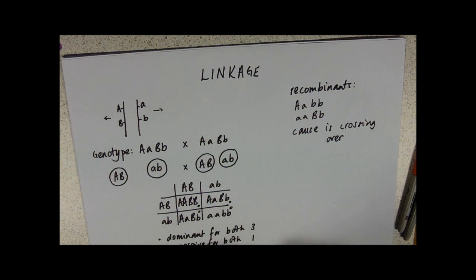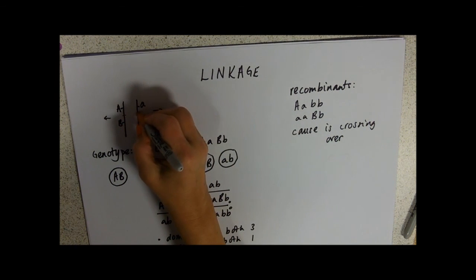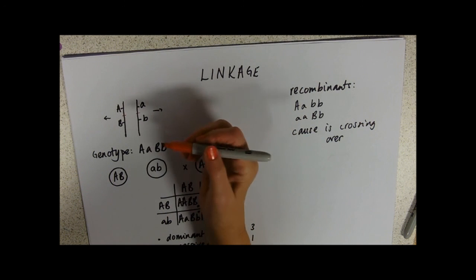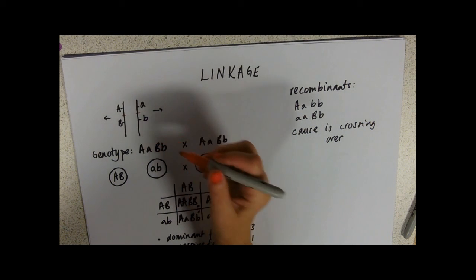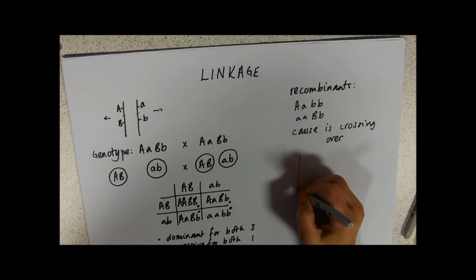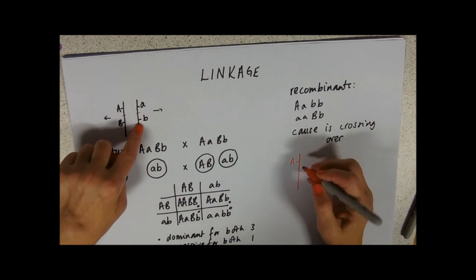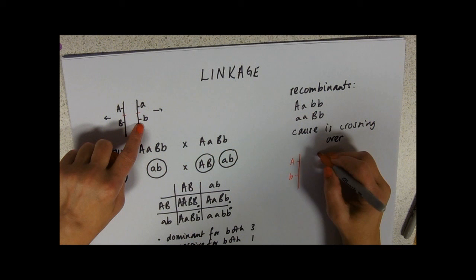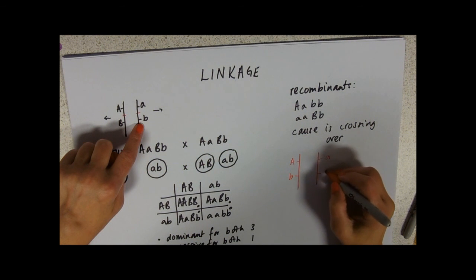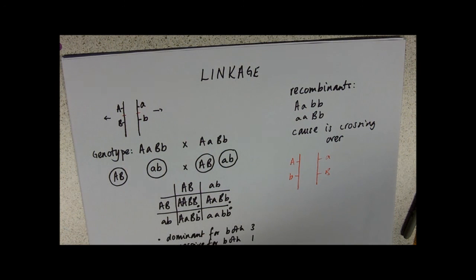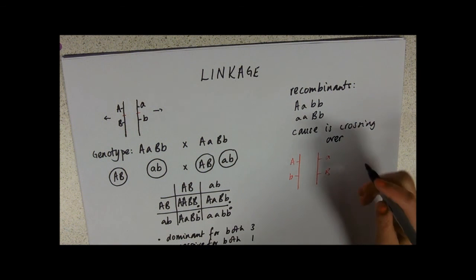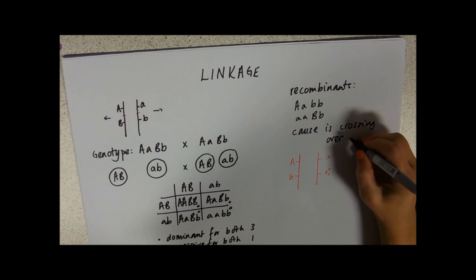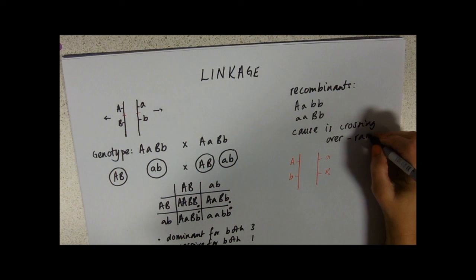Just to remind you of what crossing over is, it would be when the DNA breaks at a point in between those two alleles. It doesn't matter if it happens somewhere else, only matters if it happens between them, which would give us then our big A allele now attached to our little b allele, and our little a attached to the big B.